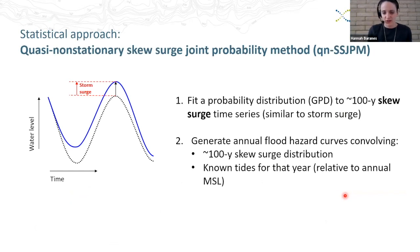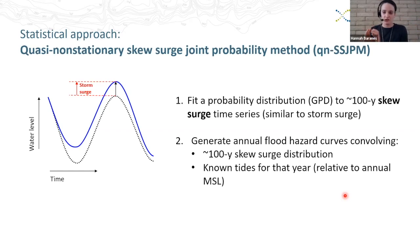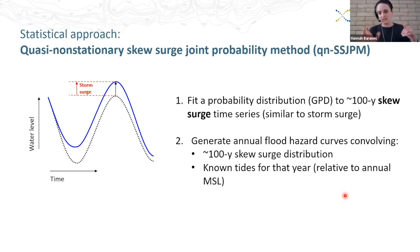The way we ended up handling that is we developed a statistical method where you essentially separate out storm surge from tides, and then fit a probability distribution to the whole time series of skew surge—which is similar to storm surge. You say: here are all the possibilities for storms, so we've captured the population of possible storms impacting Boston. But then every year, we actually know what the high tides are going to be, so you combine that surge distribution with all storm possibilities for the discrete set of high tides you know you're going to have in 2018, then 2019, then 2020, and into the future. That's called a convolution. Rather than just having one curve, you can have a separate curve for every year that leverages the fact that we know what tides are going to be.